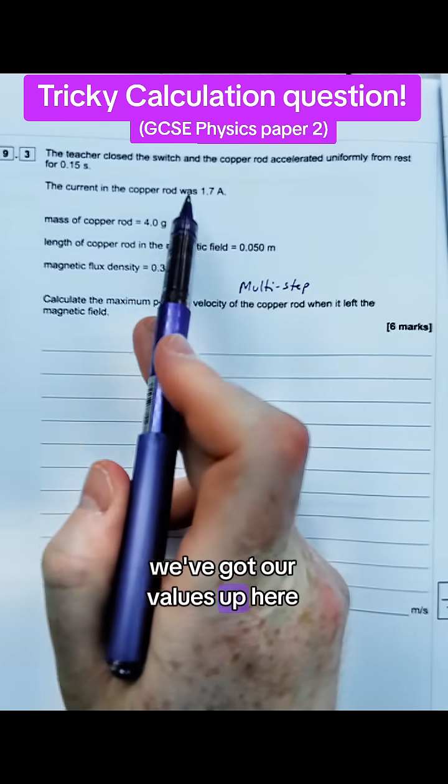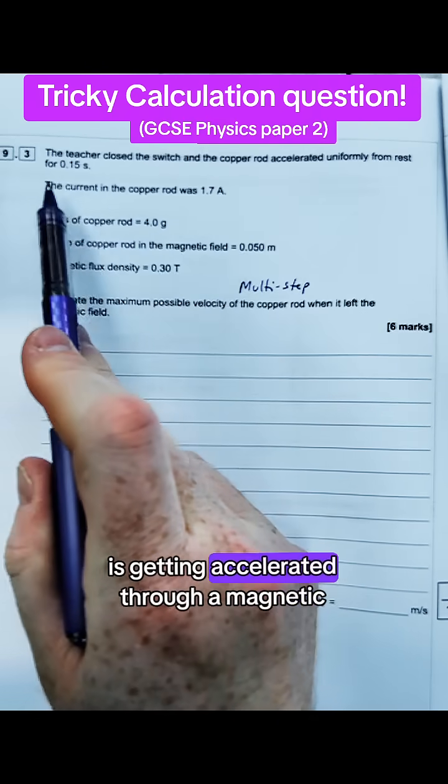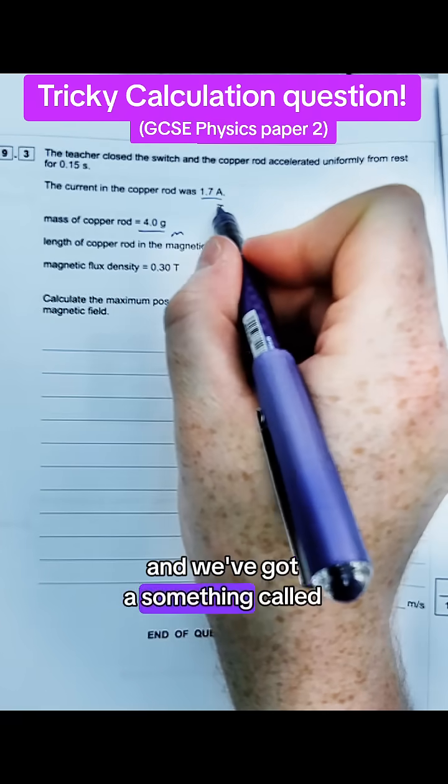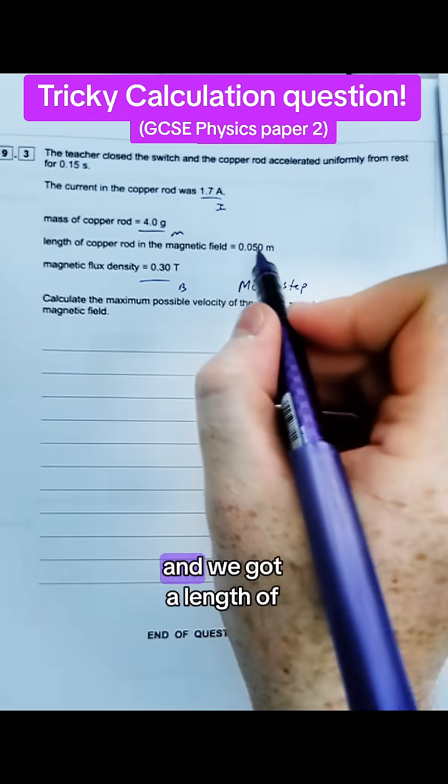We've got our values up here. We've got current and we've got a copper rod which is getting accelerated through a magnetic field. We call it mass and we've got something called magnetic flux density and we've got a length of wire in the field.